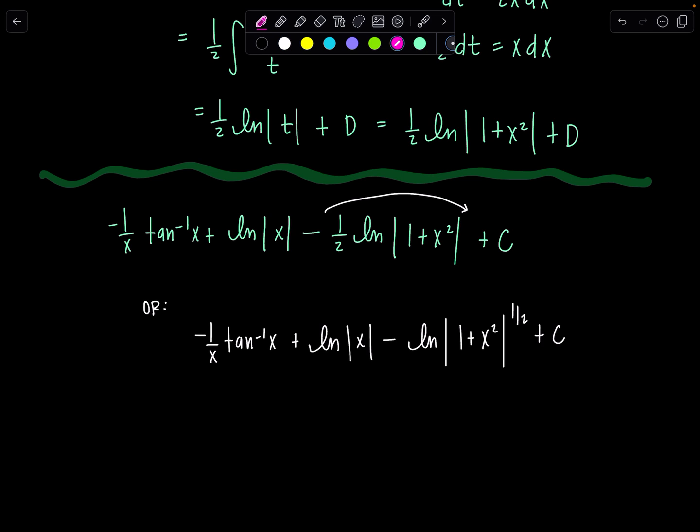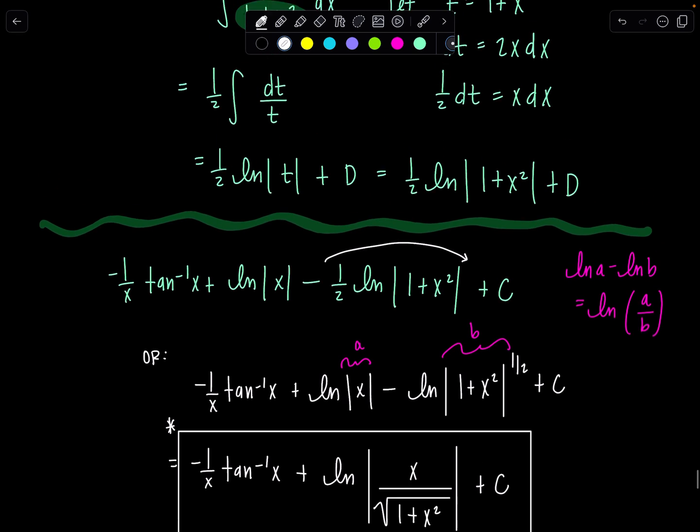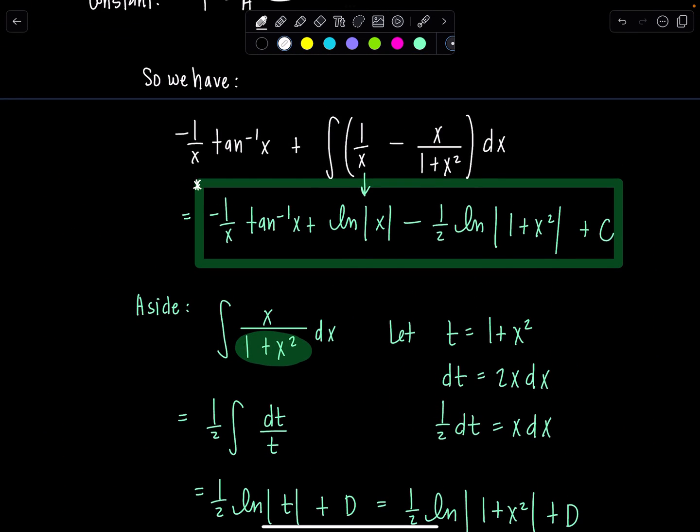And then do you remember your log properties? If you have ln of a minus ln of b, you could write that as ln of a divided by b. So that's precisely what we're going to do here. It's like this whole thing is a and this whole thing is b. So then we can write this as negative 1 over x tan inverse of x plus ln absolute value x over, I'm just going to write rad instead, 1 plus x squared in the denominator plus c. So that looks a little more cleaned up. I don't know. Do you have a preference? Tell me in the comments below which version of the final answer do you prefer? This one here or this one here without using log properties. Let me know.